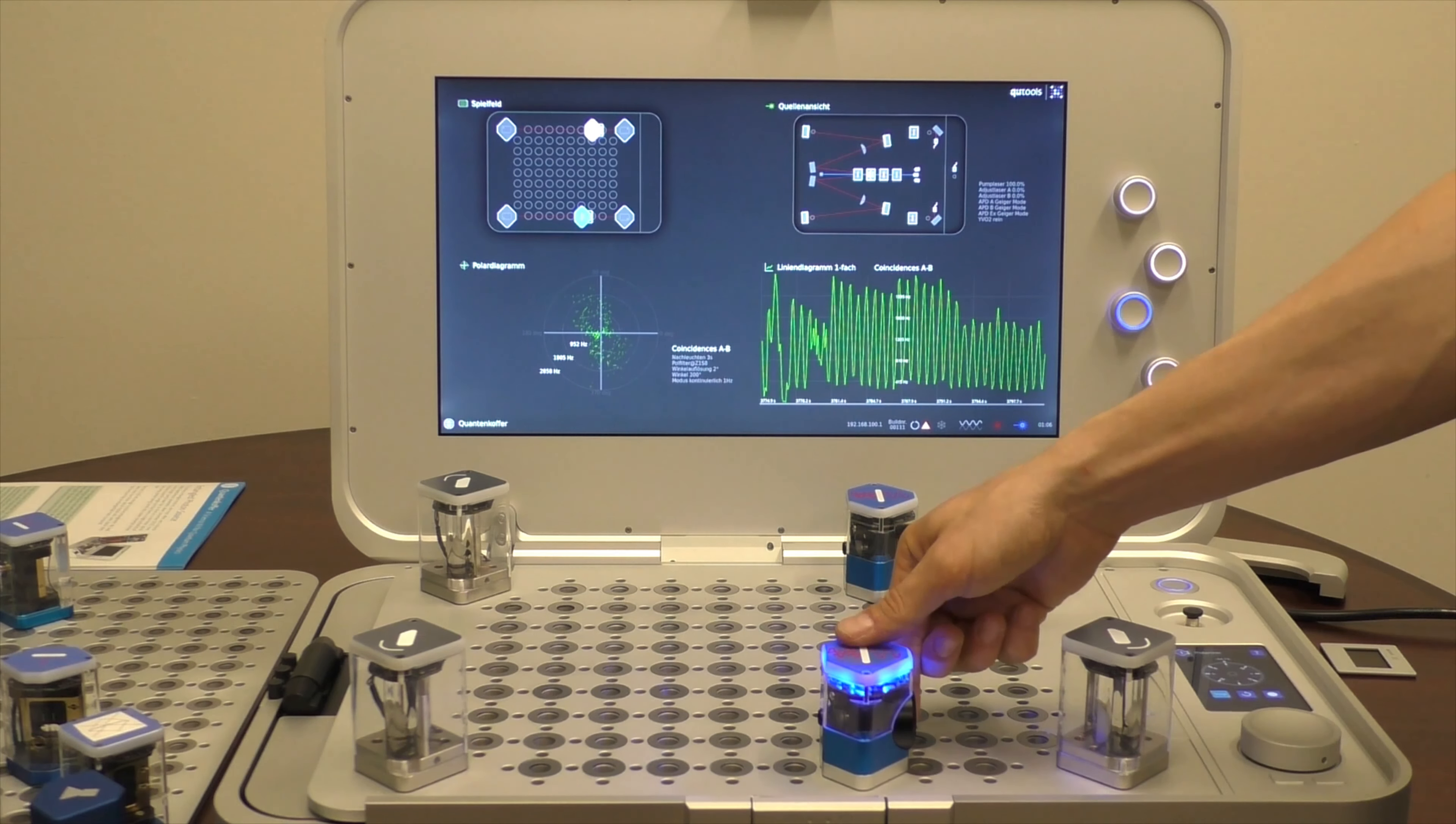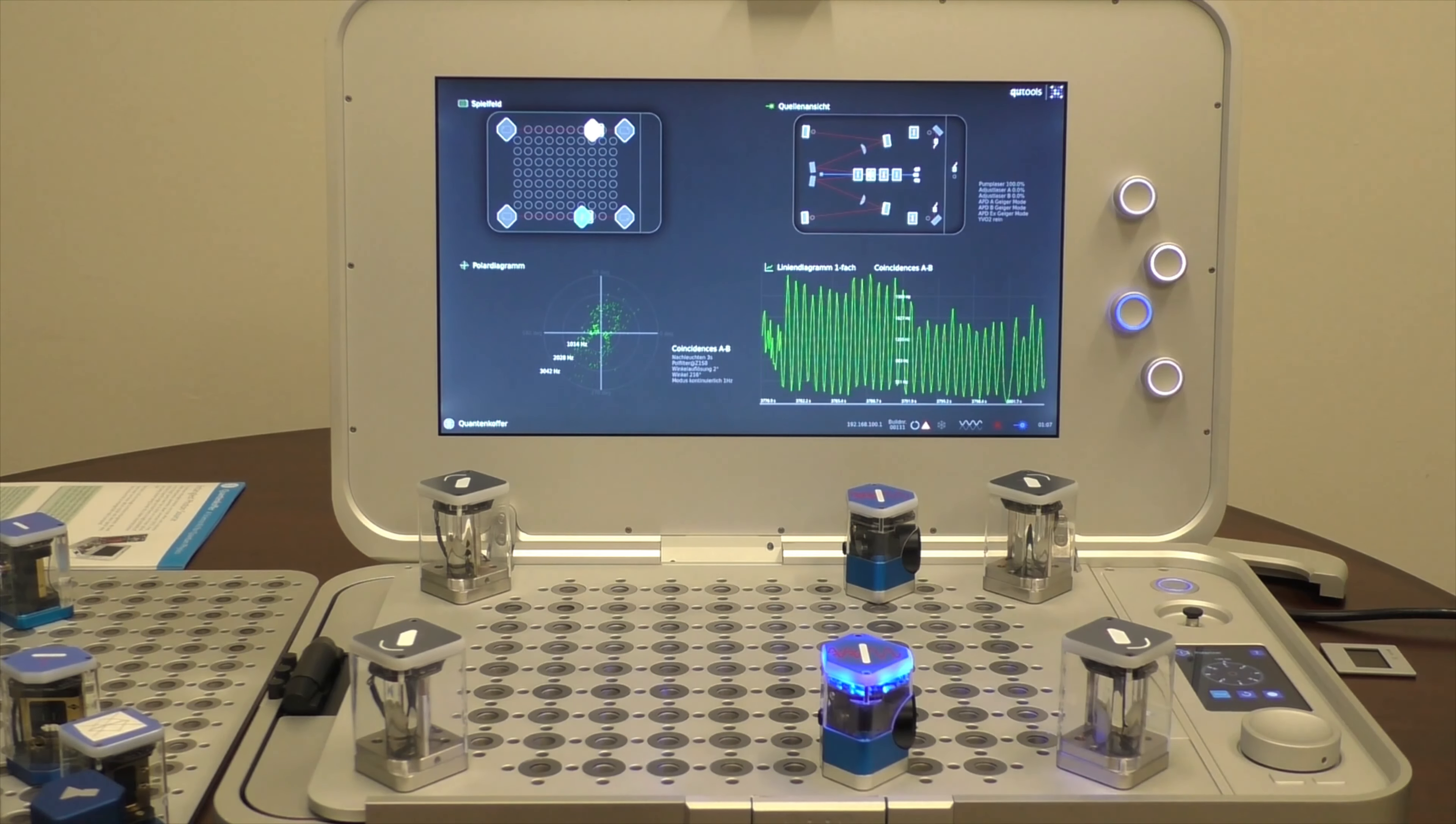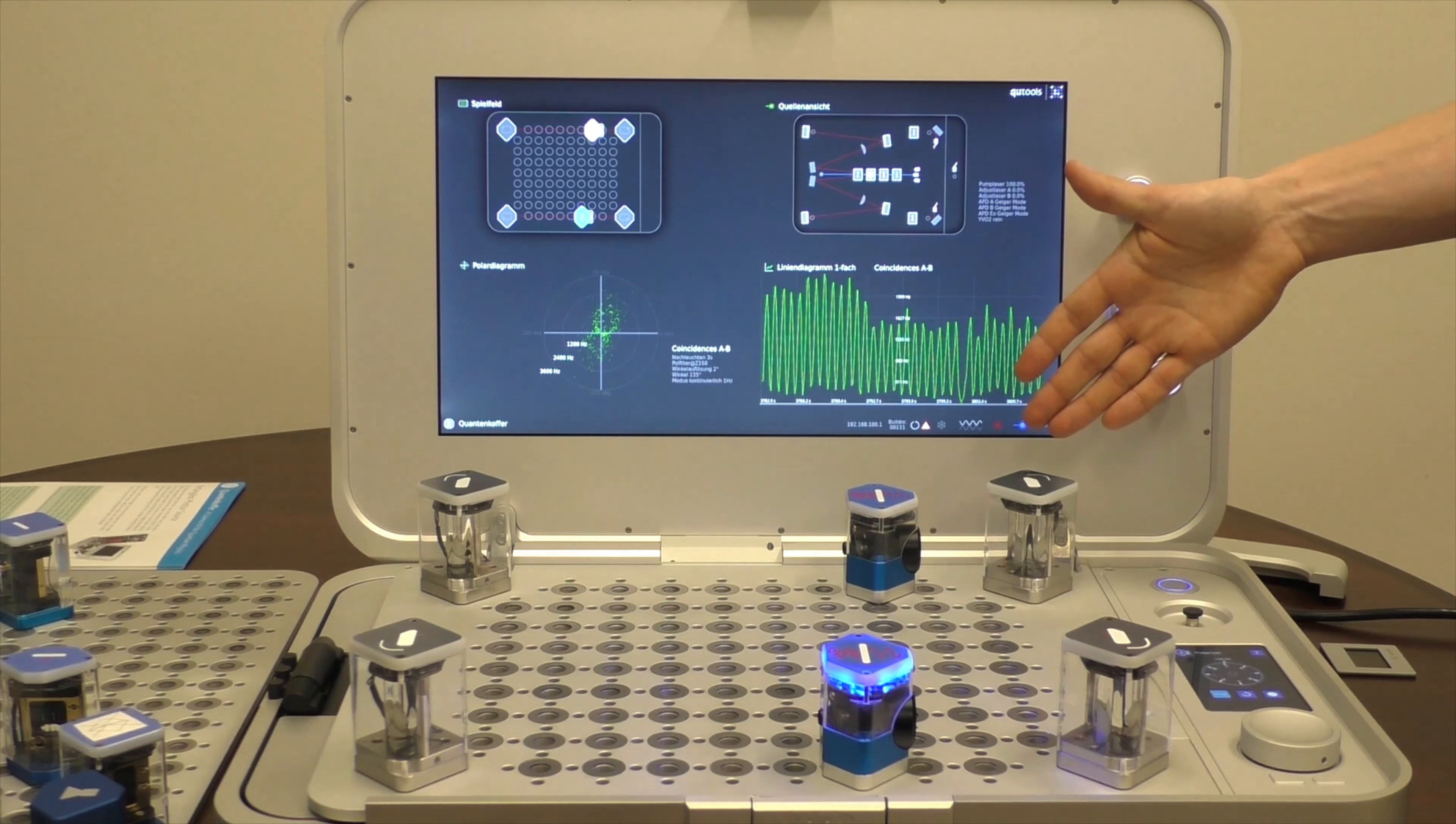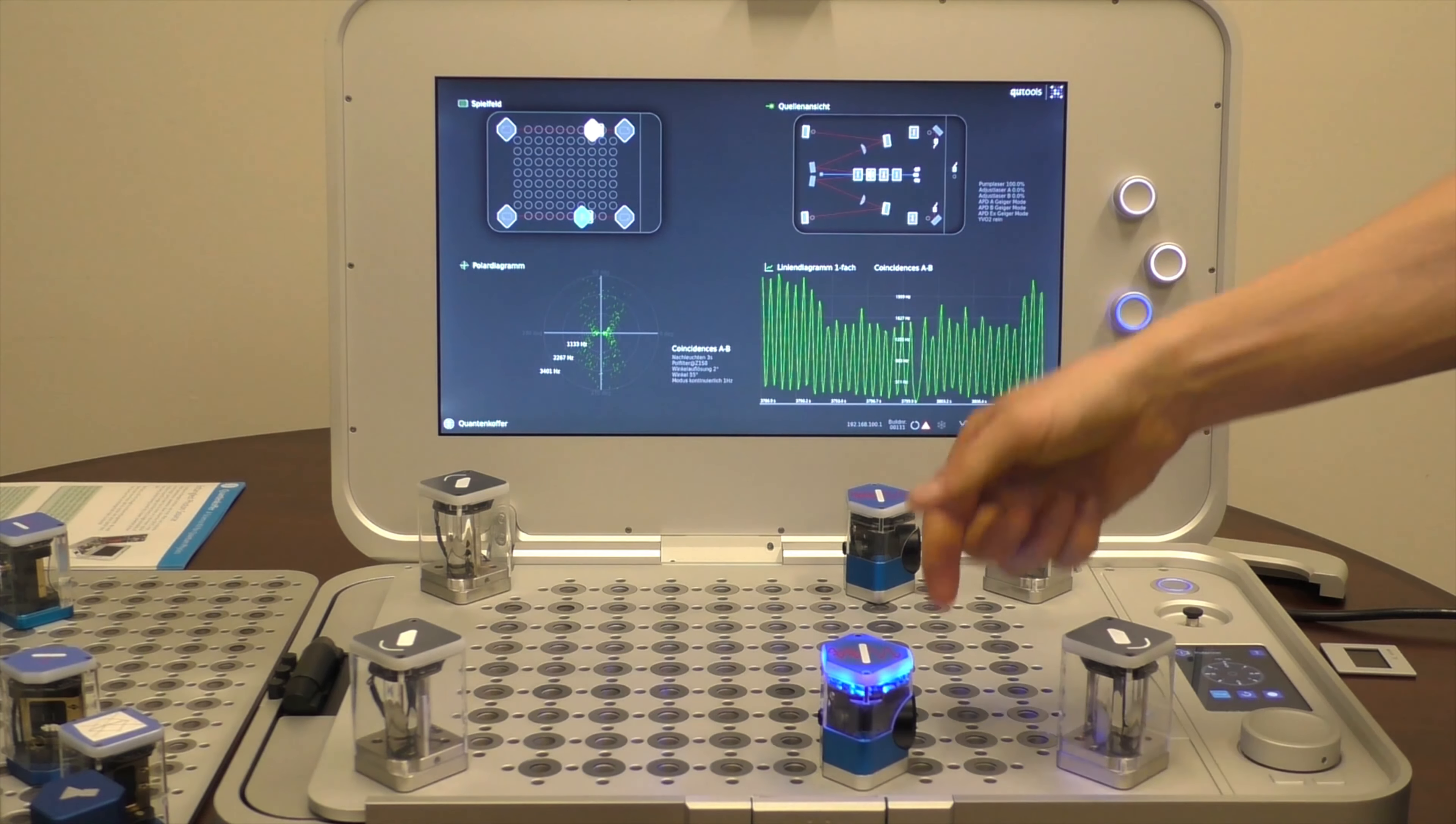So this shows that somehow what I do on this photon down here has an effect on the other photon up here because the polarization of the other photon up here is measured differently depending on which angle I set on the polarizer at the bottom.